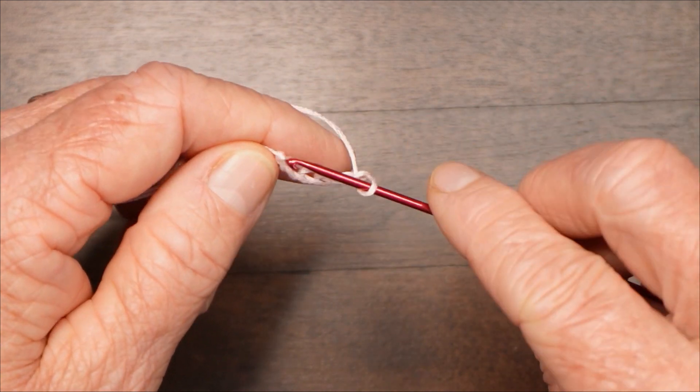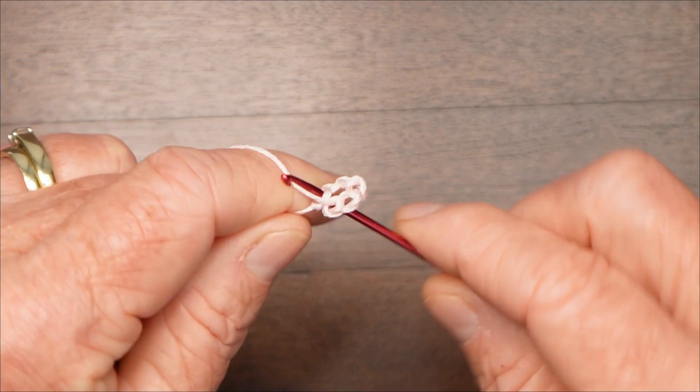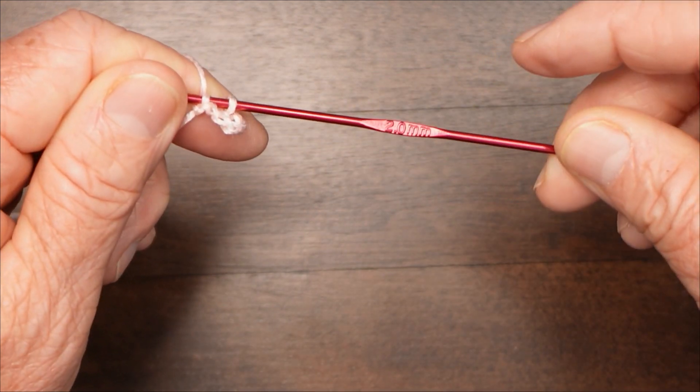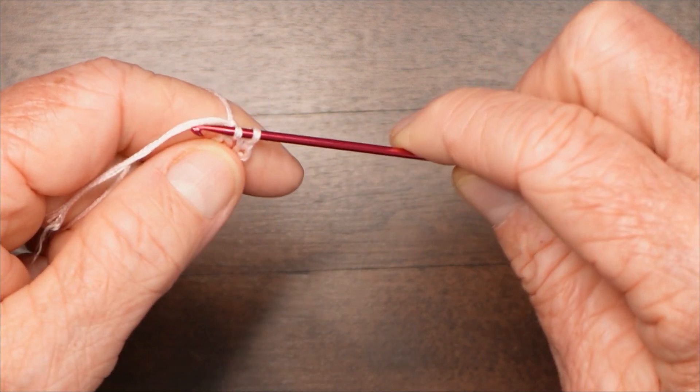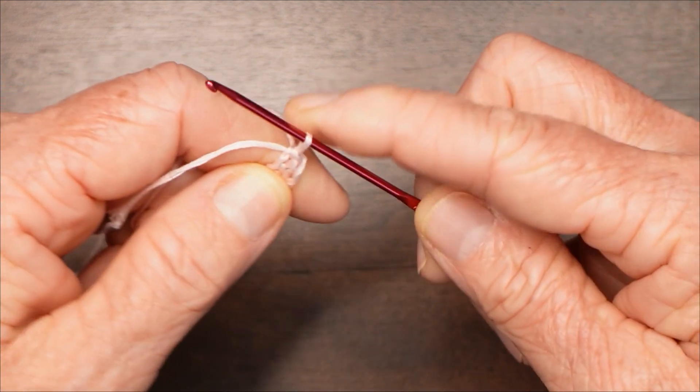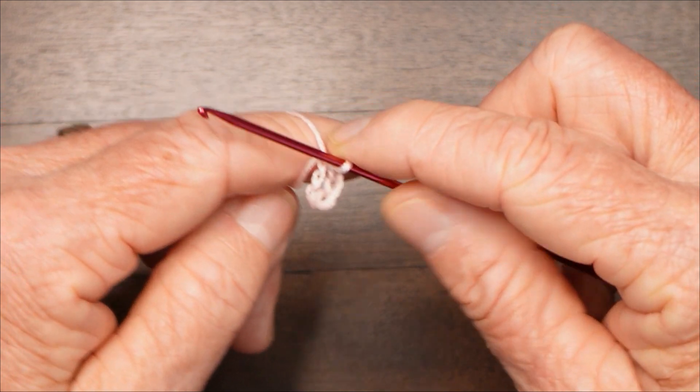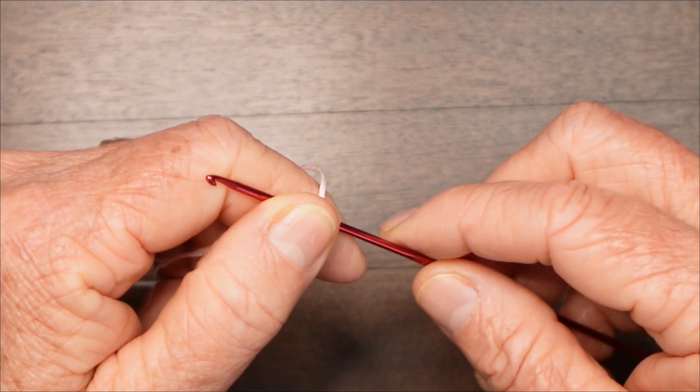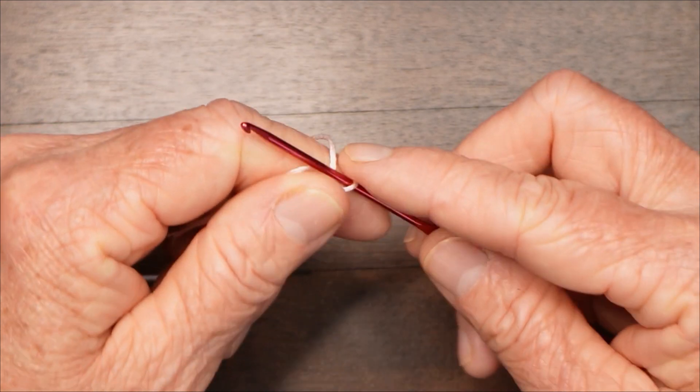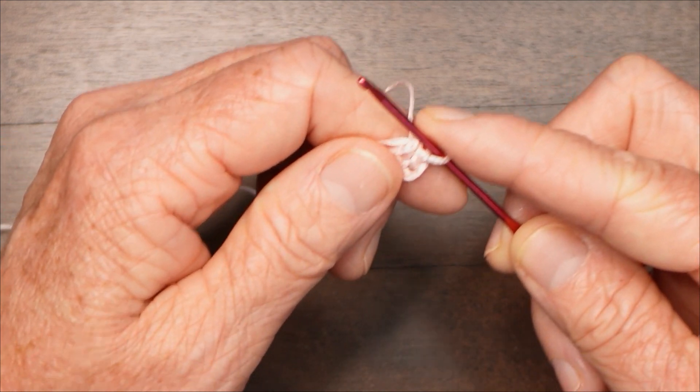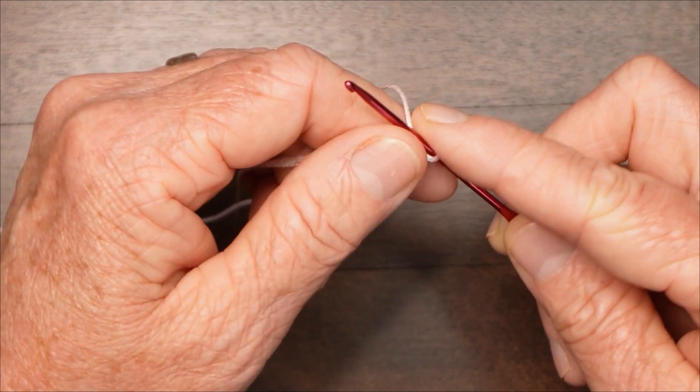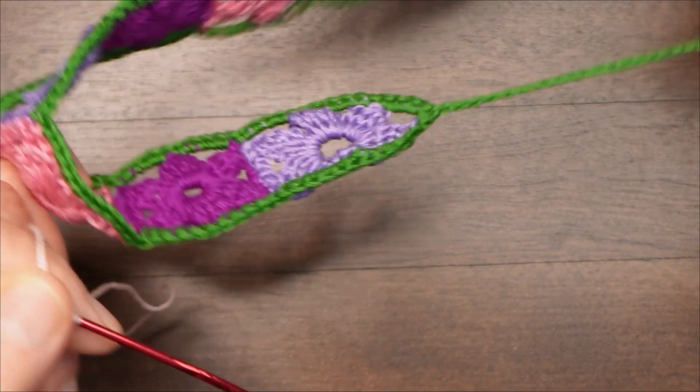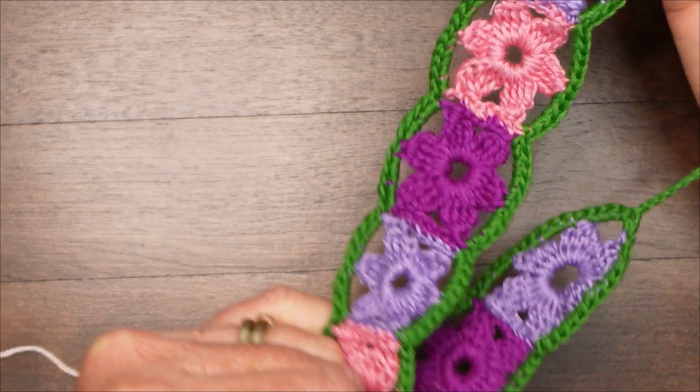After you've chained six, join with a slip stitch in the first chain. I should have mentioned I'm using a two millimeter hook here. If you're using a different yarn, just adjust your hook to match. It doesn't really matter if the headband is a little bit wider. It ends up being about 12 inches long and then adding ties, so it'll fit just about anybody. This one is designed for an adult like shown in the picture.